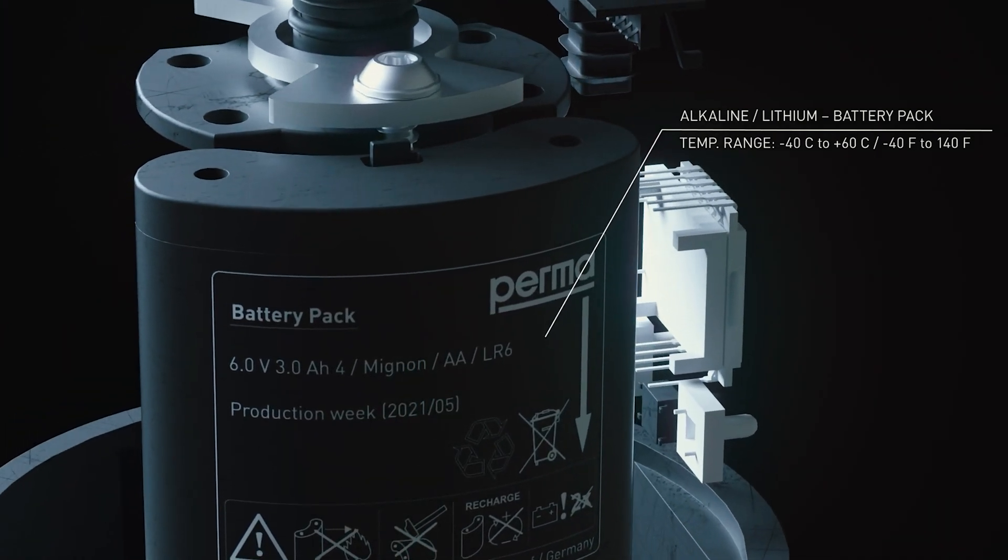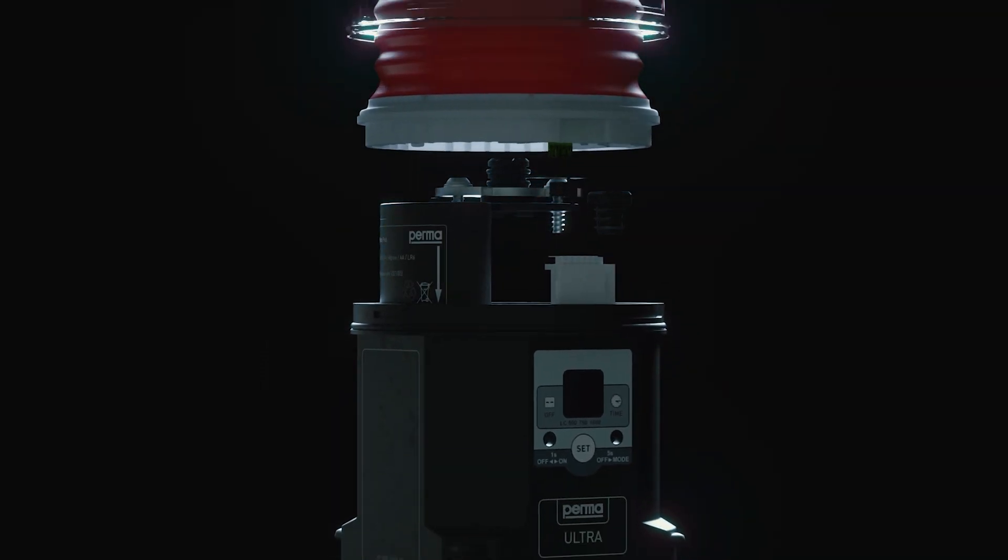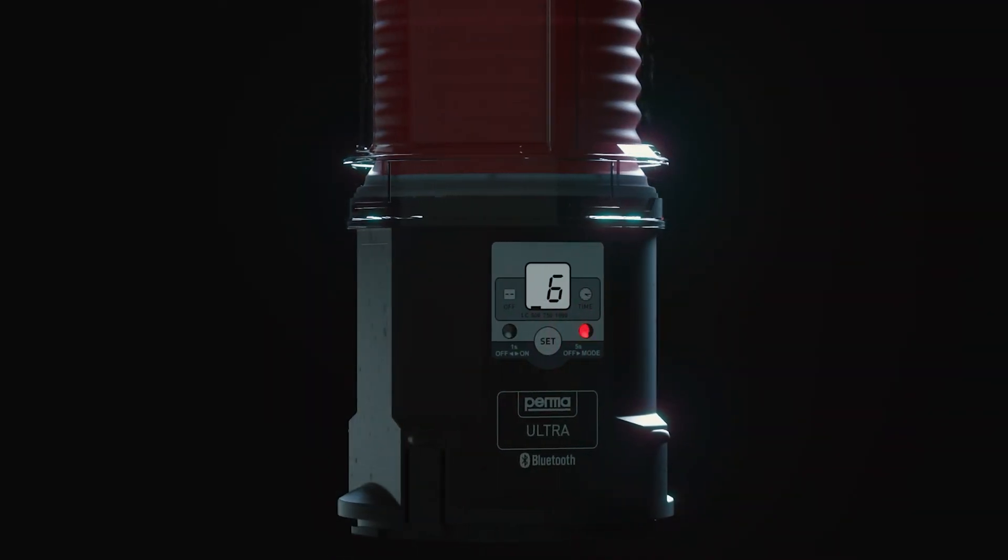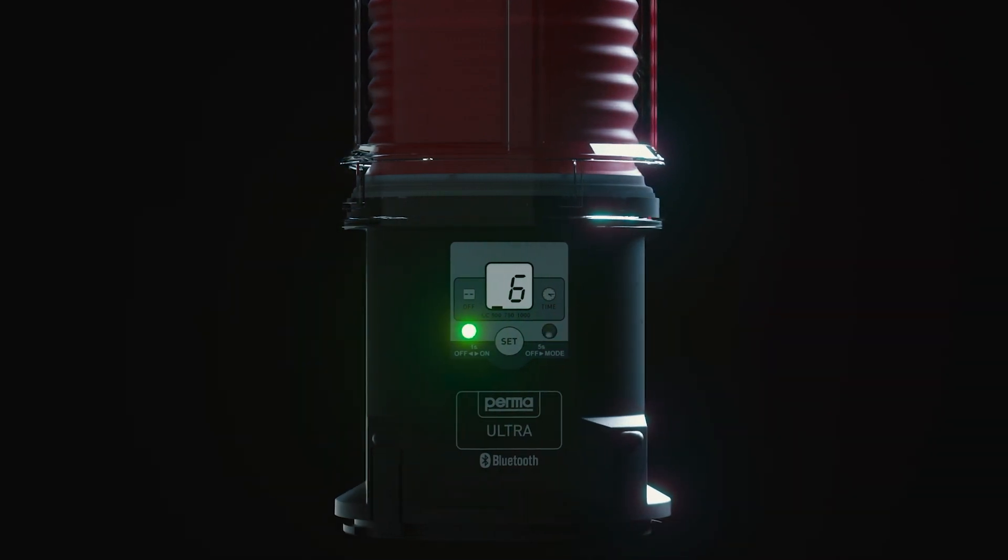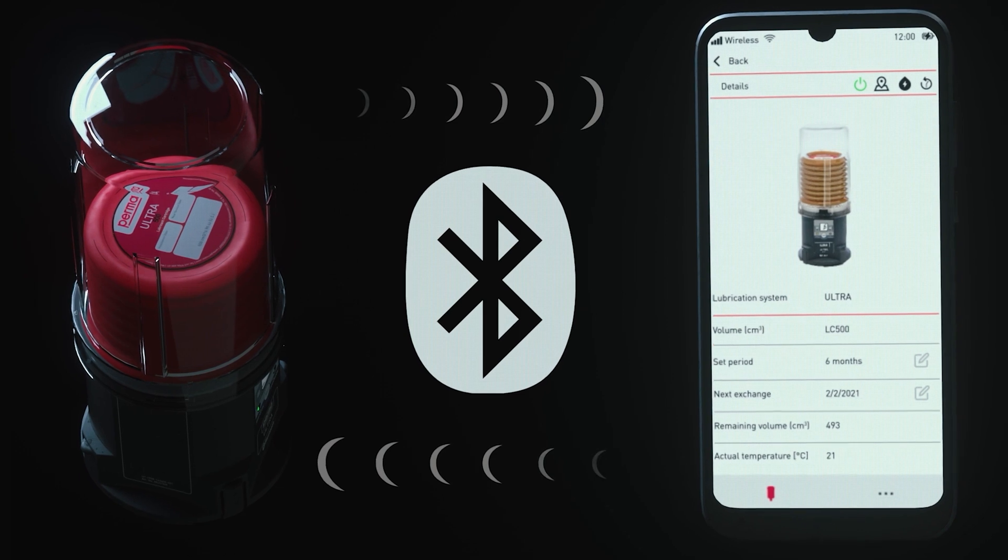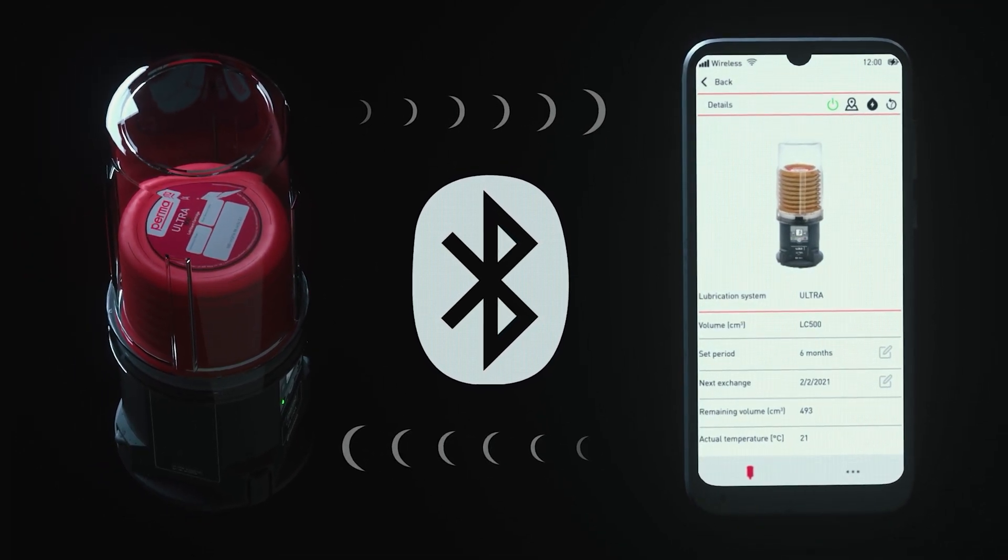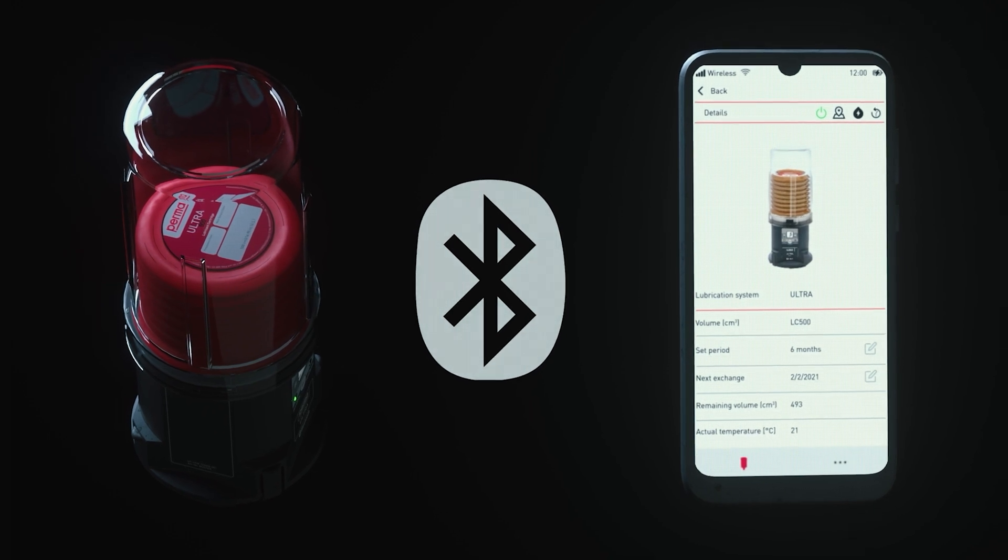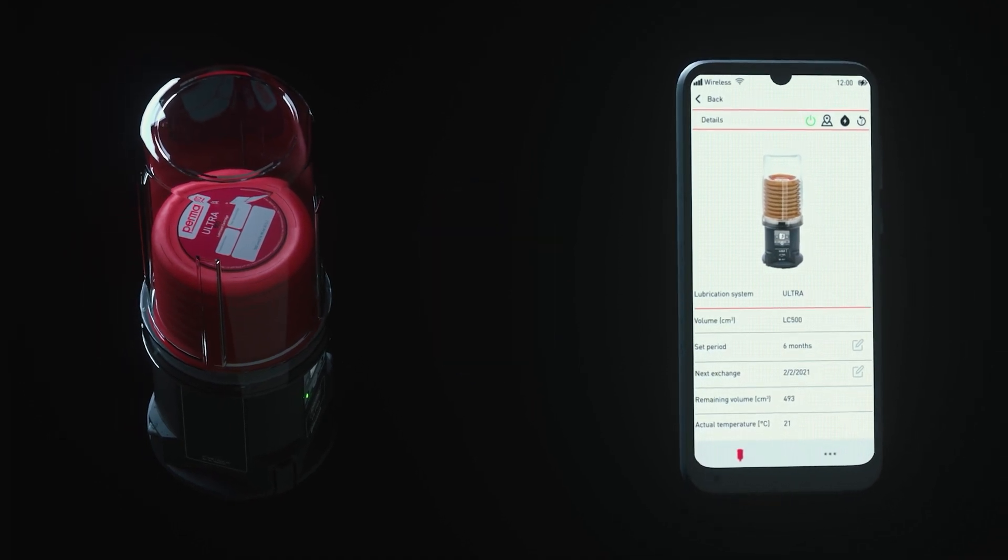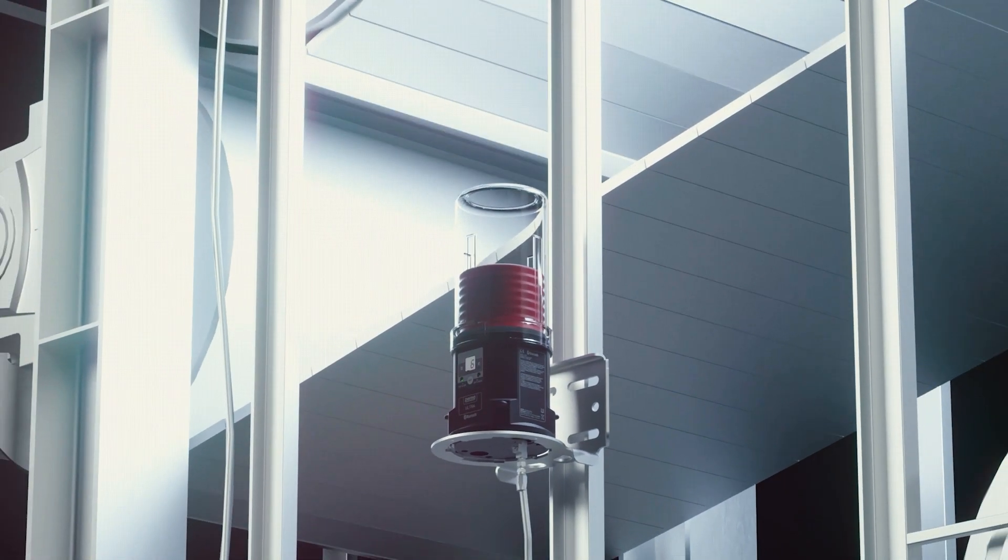The operational status of the system is communicated in a variety of convenient ways. The combination of the backlit display and the bright red and green signal lights provides immediate confirmation of the system status. This and more information such as discharge period and lubricant volume can also be viewed using the new perma connect app that is connected via bluetooth.